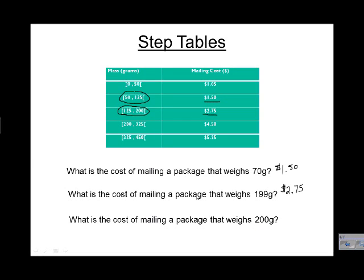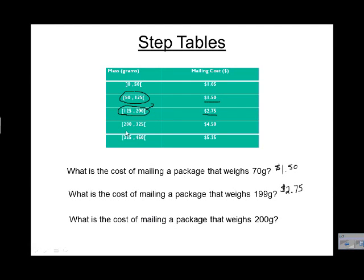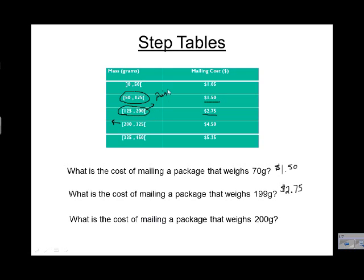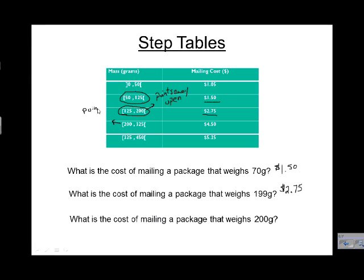And last, what's the cost of mailing a package that weighs 200? Well, now we've got an issue. 200 is shown in this group up here. It's also shown in this interval down here. So we don't know if it's 275 or 450. This time, we're going to look at the brackets. Just like we looked at the dots in the graph, we're going to look at the brackets here. When the bracket points away from the number, it's called an open bracket.